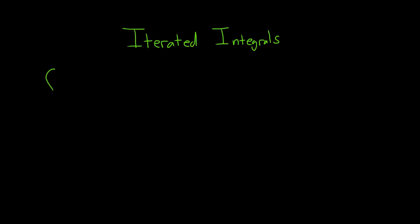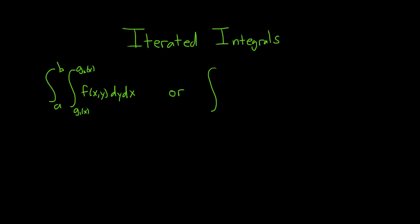So we have two cases. One case is the integral from A to B, then we write the integral symbol again with g sub 1 of x to g sub 2 of x, and then f of xy — a function of two variables — and then dy dx. The other case is we integrate from c to d, with h sub 1 of y to h sub 2 of y, and f of xy dx dy.